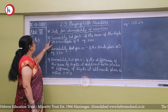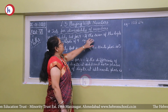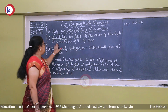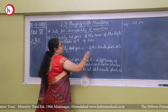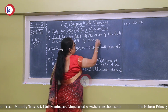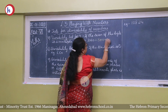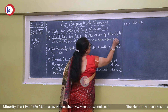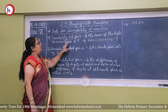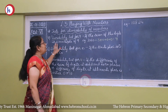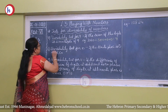Next, the divisibility test for 9: similar to the test for 3, if the sum of the digits is a multiple of 9, the number is divisible by 9. For example, 3060: 3 + 0 + 6 + 0 = 9, and 9 is a multiple of 9, so 3060 is divisible by 9.